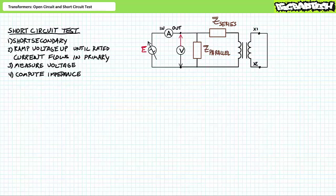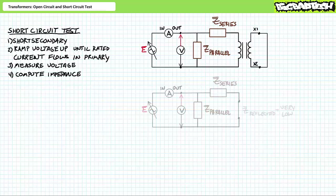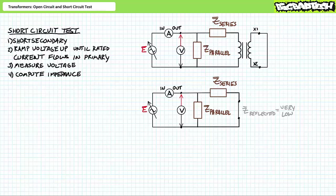With a short circuit on the secondary, substantial current will flow in the primary even at extremely low voltages. Ultimately, the magnitude of the applied voltage is reflective of an imagined series impedance accounting for the copper losses in both the primary and secondary windings inside the transformer equivalent circuit, among other effects. Given voltage and current readings, one can then easily determine the magnitude of the series impedance as well as the apparent real and reactive power experienced by it.